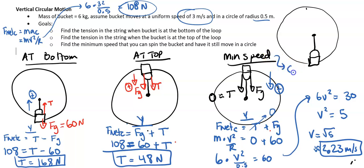Another name for min speed, you'll also see it called critical speed. So that is the min speed or the critical speed for something to move in a circle. And 2.23 is less than 3 meters per second. Thanks for watching.